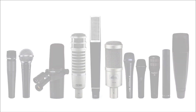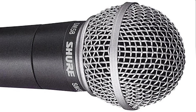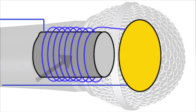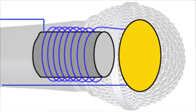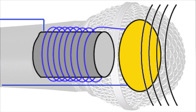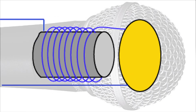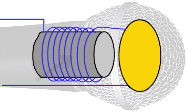A dynamic microphone effectively operates as the inverse of a speaker. Inside the microphone, there is a small, lightweight diaphragm connected to a movable coil of wire. This wire sits within the field of a permanent magnet. When the diaphragm is exposed to sound waves, it vibrates at the same frequency. This in turn vibrates the coil within the magnetic field, producing an alternating current.